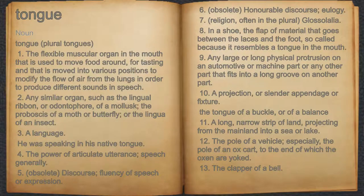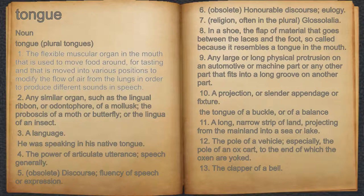Tongue. Noun. 1. The flexible muscular organ in the mouth that is used to move food around, for tasting, and that is moved into various positions to modify the flow of air from the lungs in order to produce different sounds in speech.